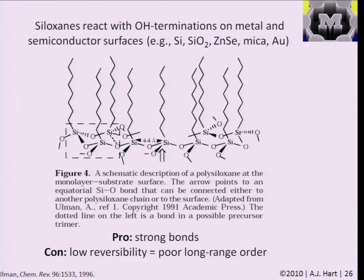Another widely used example is the formation of monolayers on semiconductor surfaces. Molecules with siloxane groups on the end bond very strongly, for example, to silicon, silicon oxide, or other semiconductors. This is a case where you get very strong bonds, but the interaction is not very reversible, so you might form small, very ordered domains but will not form monolayers with very strong long-range order — unless conditions are very slow, so the domains nucleate slowly and form carefully rather than bombarding the substrate with molecules that attach immediately.